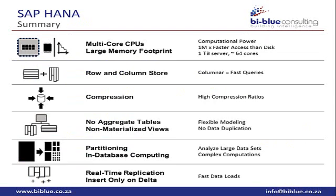To recap on HANA: because we use certified hardware, it is delivered with multi-core CPUs and a large memory footprint. We have both row and column store, with column store performing much better for analytics. We have compression, reducing hardware costs. We don't need to pre-aggregate tables — data stays in raw format for maximum detail — and we can analyze large data sets and complex computations. Real-time replication enables fast data loads.